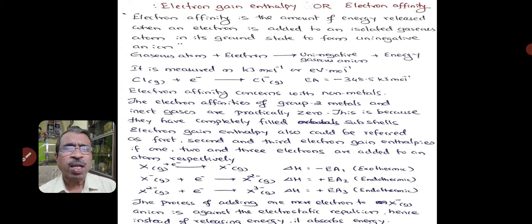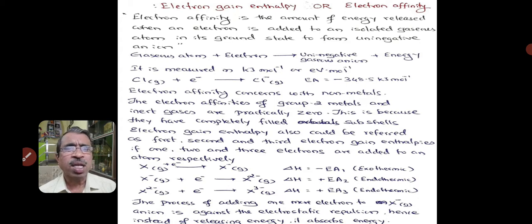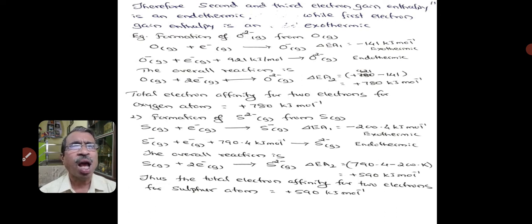Similarly, when an electron is added to the di-negative gaseous ion, we get a trinegative gaseous ion. Here also the electron gain enthalpy is endothermic, and is much greater than the second electron gain enthalpy. The process of adding electrons to a negatively charged gaseous ion is against electrostatic repulsion — hence, instead of releasing energy, it absorbs energy. Therefore, it is concluded that second and third electron gain enthalpies are endothermic while the first electron gain enthalpy is exothermic.